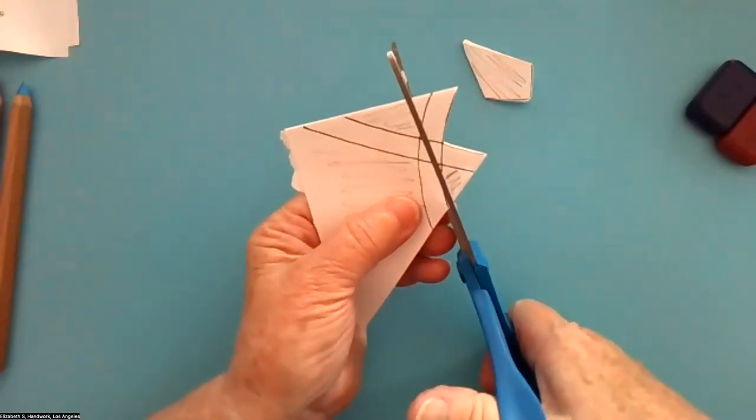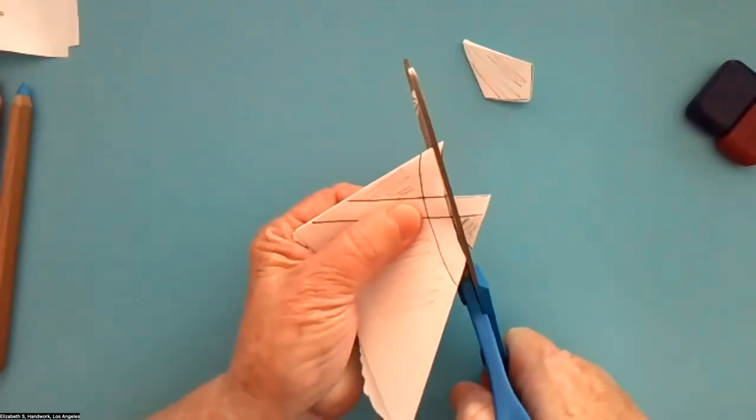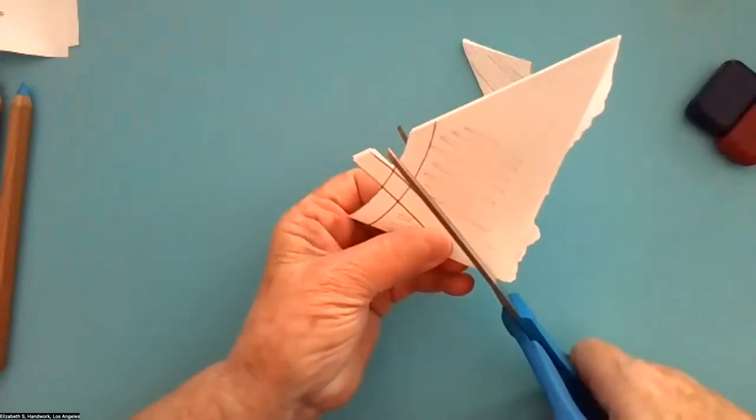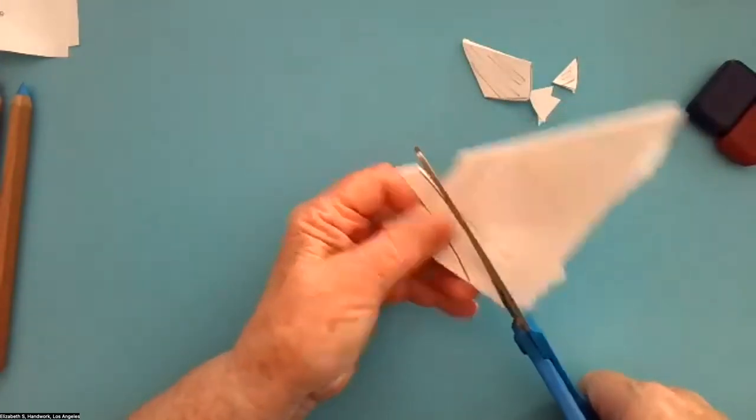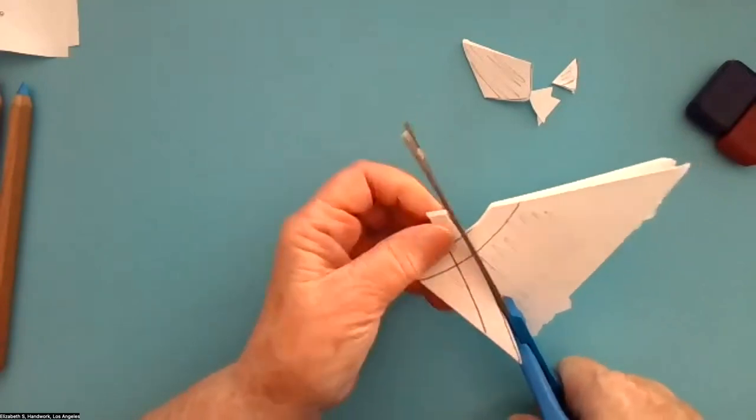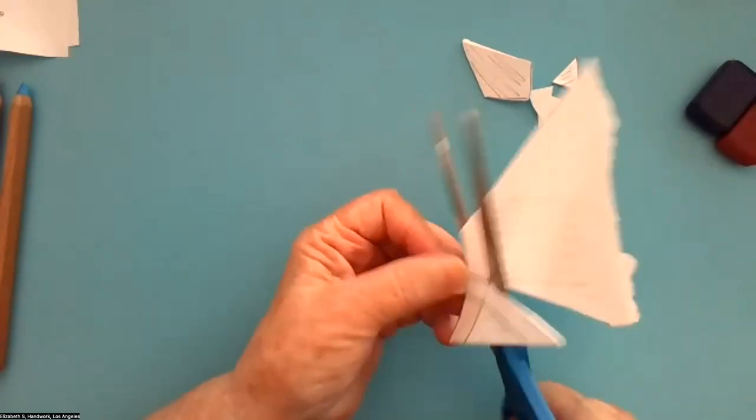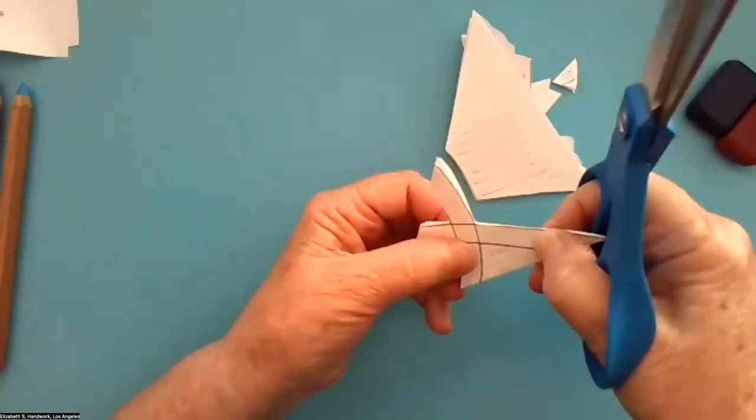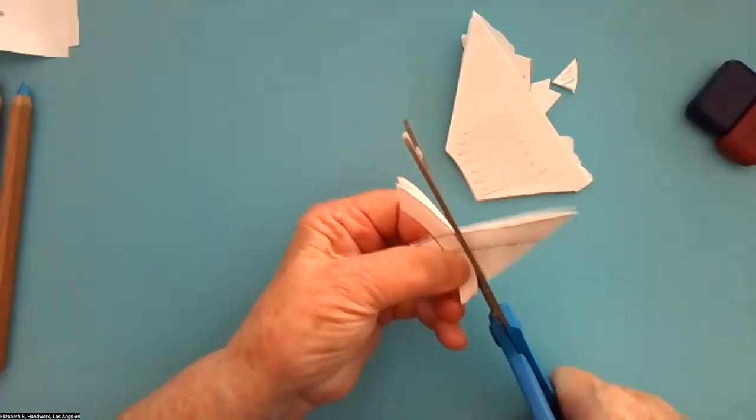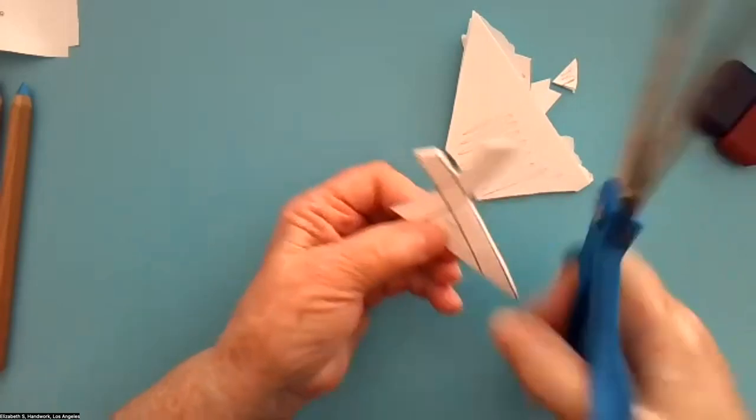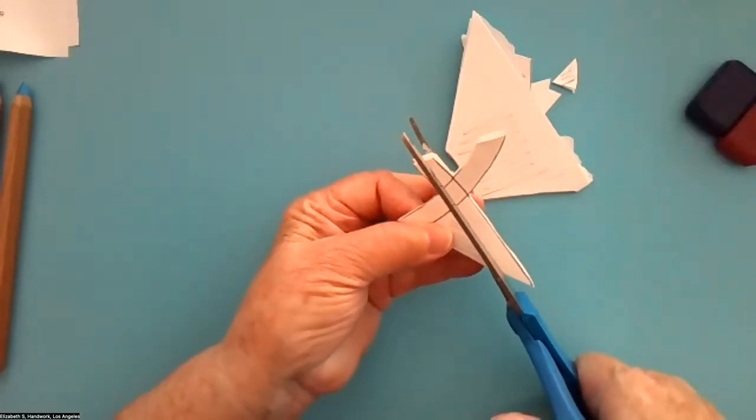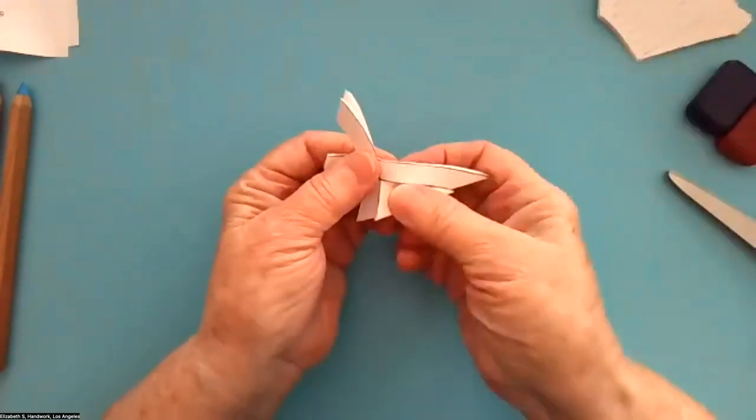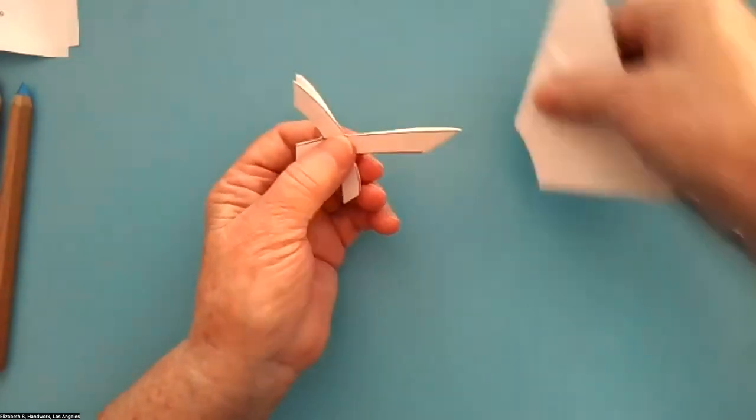You can also do this, of course, with scrap paper of any size. It's a great activity for practicing scissor work. And that's one of those skills, isn't it, that somehow kids don't have as much now as they used to when I started teaching. Straight and curved lines. I'm going to just throw these bits out for now.